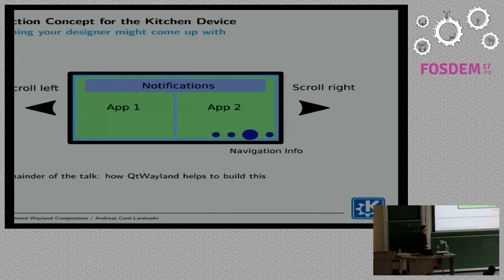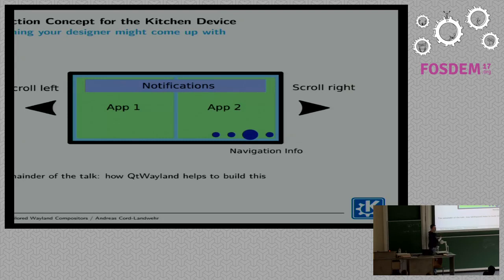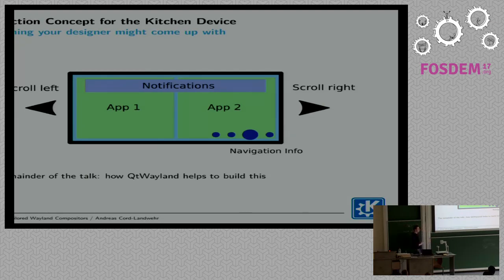I'm going to draw a small picture about what I explained to you. That's the size of a Raspberry Pi display. I want to have the applications aligned horizontally, with a swipe gesture left and right. I want to have navigation information showing where I am on my screens. And I want to have some notifications sent from the applications and shown in the compositor, which is actually not that trivial as it sounds at first hearing.